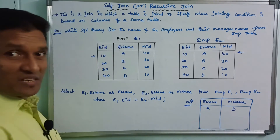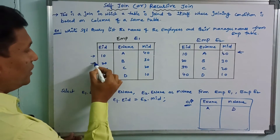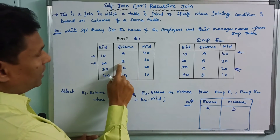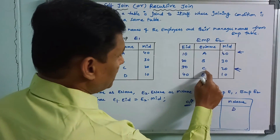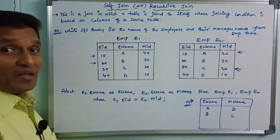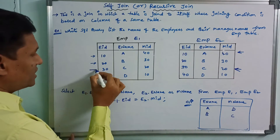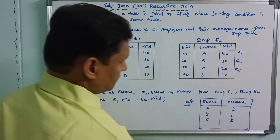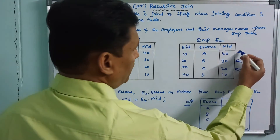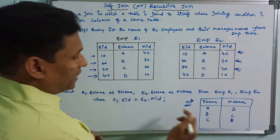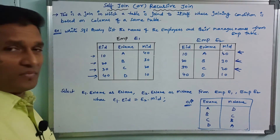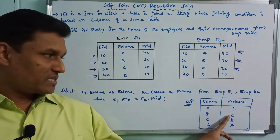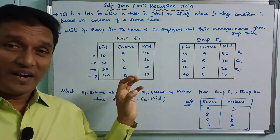The output pairs are: A and A, D and A, C and A. For record 20, B is matched — B and A. For record 30, name is C — C and A. For record 40, D is the employee name and A is the manager name. This is how we display employee names and their corresponding manager names.